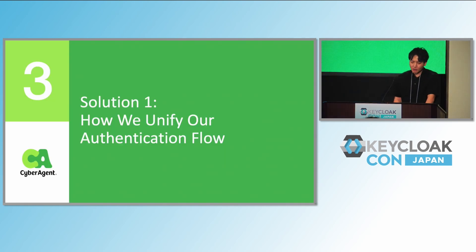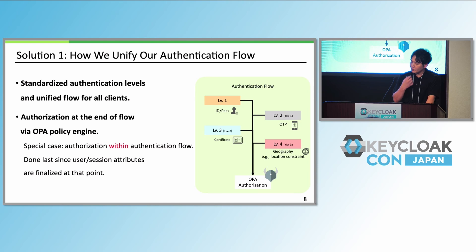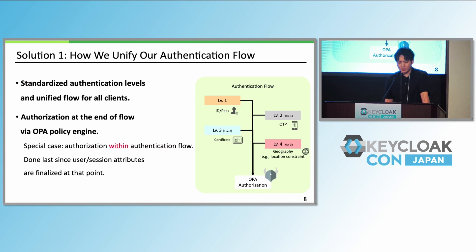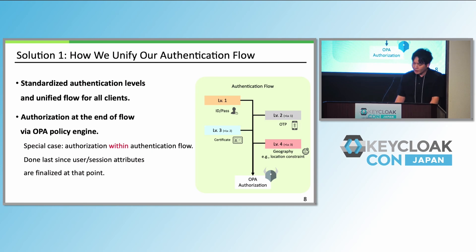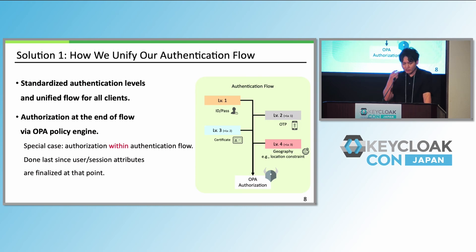How we unified our authentication flow: we designed standardized authentication levels from basic ID paths to geography-based constraints. Here's how it works — Level 1: ID and password. Level 2: OTP. Level 3: client certificate. Level 4: location-based restriction.